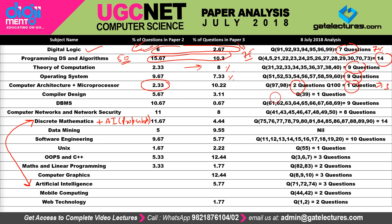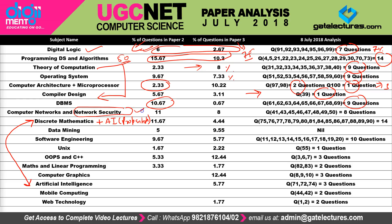In compiler design, they asked only one question. Generally compiler design is studied with theory of computation, but the number of questions from compiler design has dropped this time. In DBMS they are asking nine questions, similar to before. For computer networks and network security combined — since network security is a part of computer networks — they asked a total of eight questions, so no huge change there either.